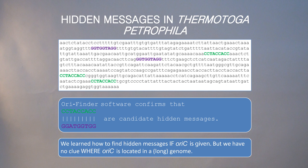But wait a second. I told you how to find DnaA boxes as frequent words if the origin of replication is known. But of course, the position of the origin of replication — these 500 nucleotide regions where we look for frequent words — is unknown. How possibly can we find it? Remember, we have to find these 500 nucleotide regions in a genome that may be millions of nucleotides long.